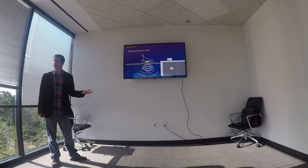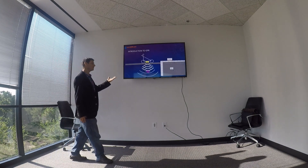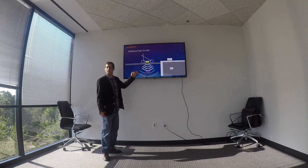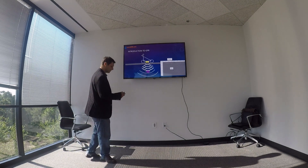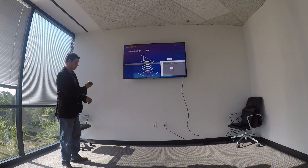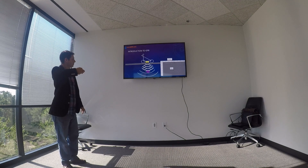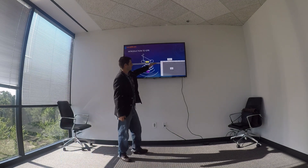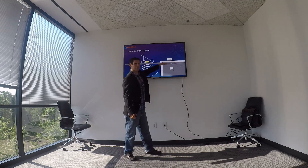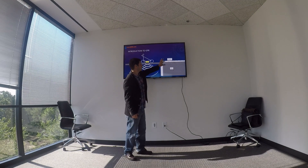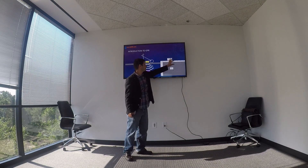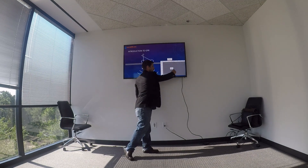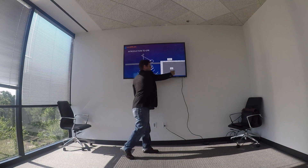Here's an example of GPR data, very basic, and it's in a sense what you would see if this was your site. What we're seeing is this linear reflection event, which is the bottom of the asphalt. So in this case you can estimate asphalt thickness. And then we're also seeing this hyperbolic reflection, which is a sewer pipe.